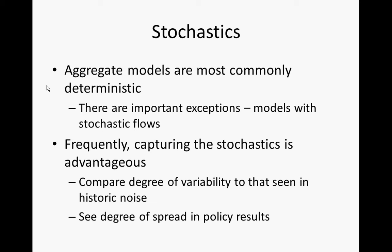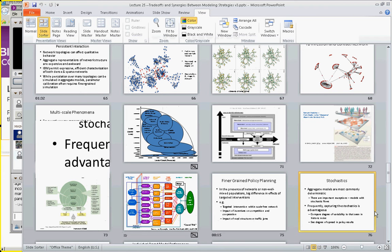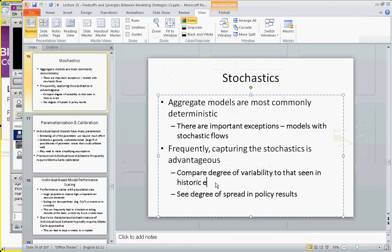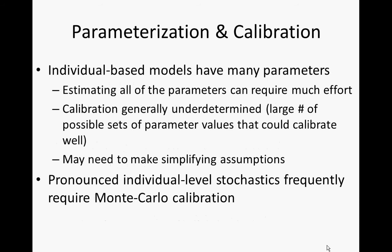You can build aggregate models in Vensim or AnyLogic with stochastic flows, but very commonly an aggregate model would be deterministic. Deterministic models are much easier to analyze. However, sometimes we want to capture stochastics because we want to reason about variability seen in empirical observations. For example, we may have data on the number of individuals developing diabetes in different years and see a lot of variability — and we're wondering whether our model can account for sometimes going up, sometimes going down.